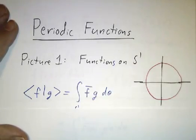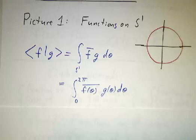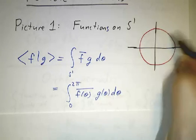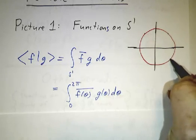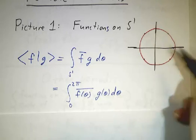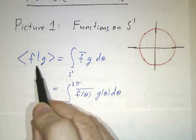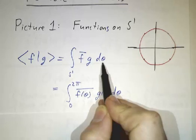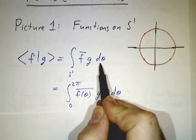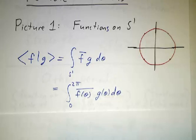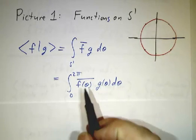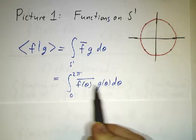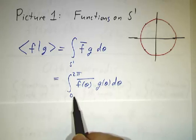There are three ways to think about a periodic function. One is to say it's a function on a circle. You have to assign a value to each point on the circle. And if you want to take the inner product of two functions, you have to integrate over the circle — the conjugate of the first times the second, dθ or ds, integrating with respect to length along the circle. We usually parameterize points on the circle by angle, in which case it would be f-conjugate times g dθ, integrated from 0 to 2π.